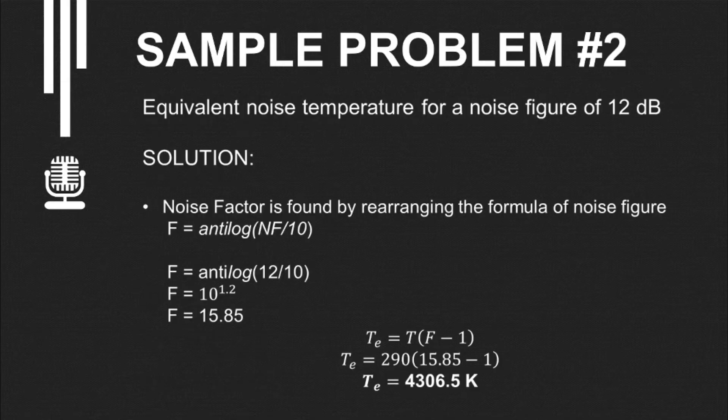Now for problem number 2: equivalent noise temperature for a noise figure of 12 decibels. The given is 12 decibels. The solution: noise factor is found by rearranging the formula of noise figure. The given is our noise figure of 12 decibels, so we'll find the equivalent noise temperature.